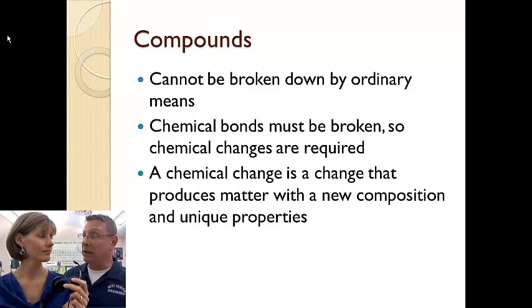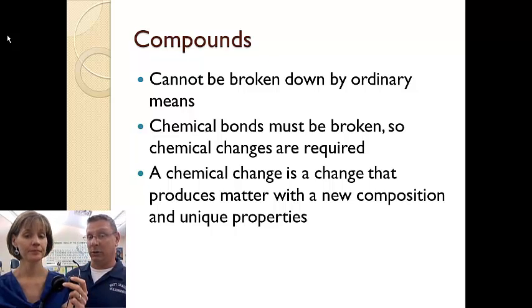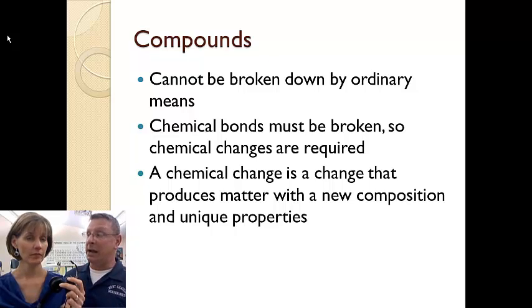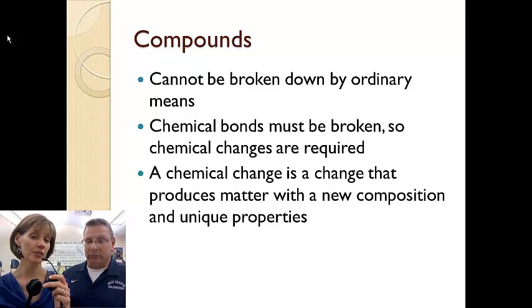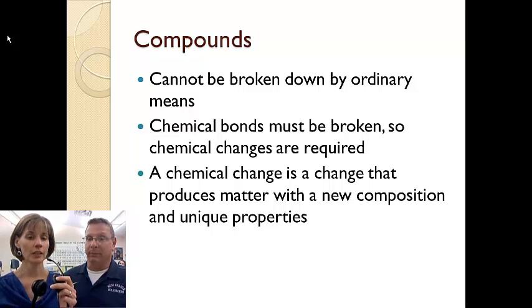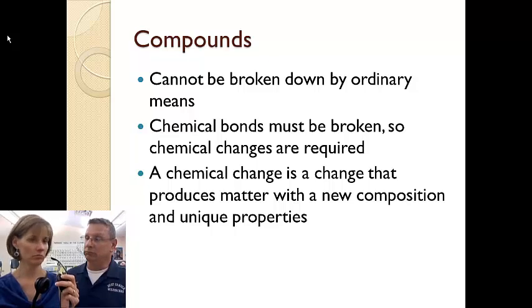When we burn gasoline in our automobiles, we produce lots of different chemical compounds. We get carbon monoxide. We get ozone. We get carbon dioxide. Some water vapor. And those are products of the chemical reaction of burning gasoline. And we can tell that that change has happened because our car is running. The engine's heating up. There's that combustion going on within our car's engine that allows us to drive around wherever we want.